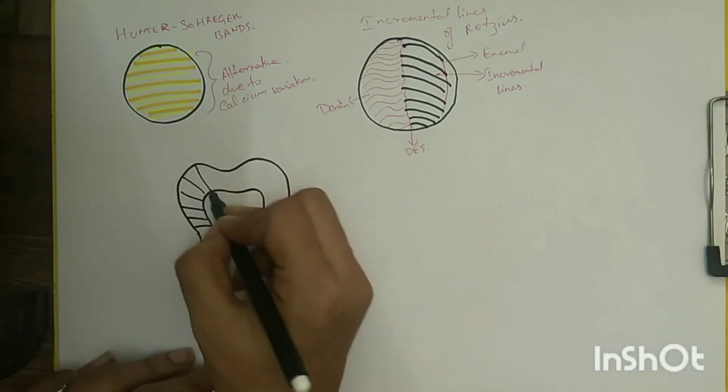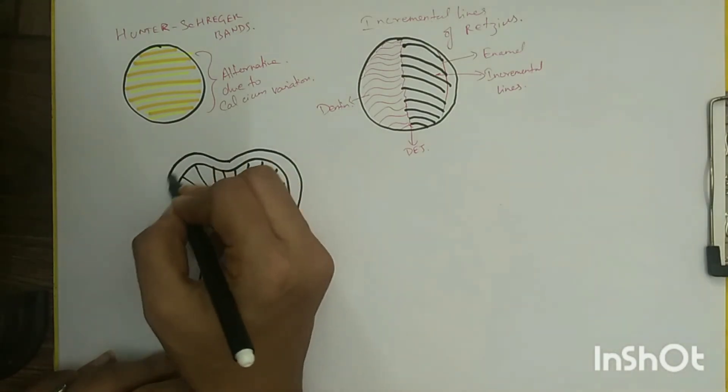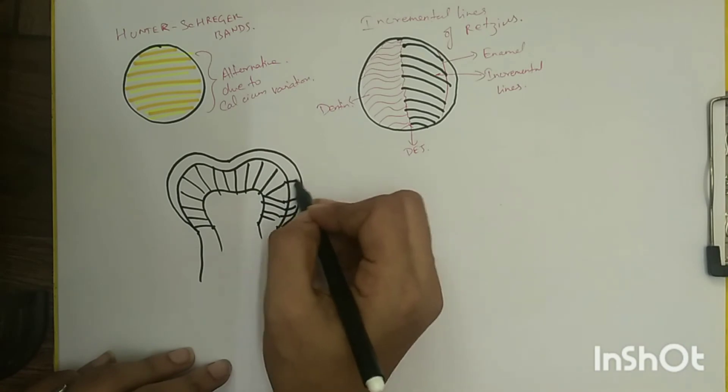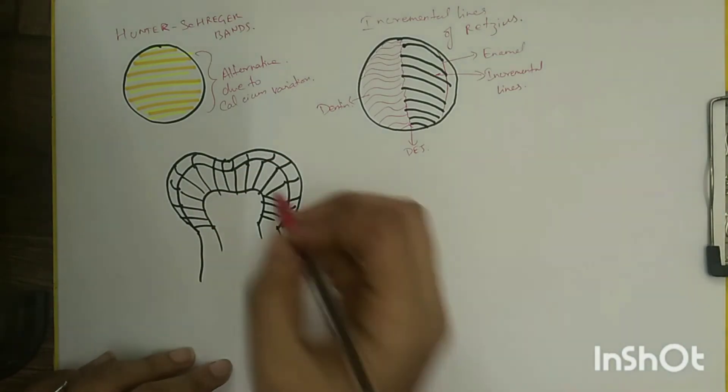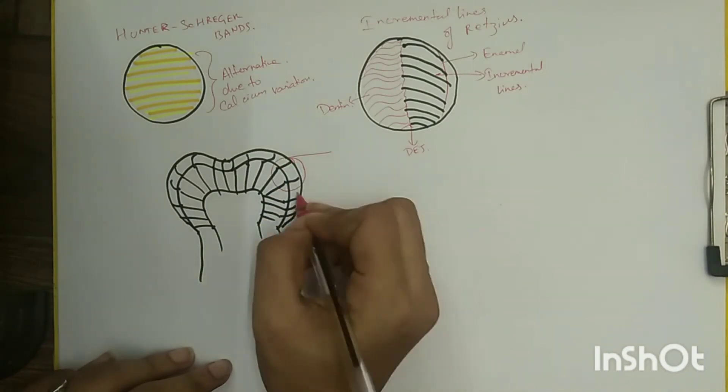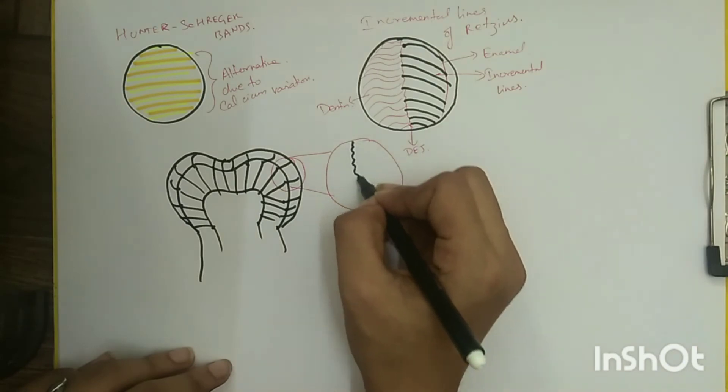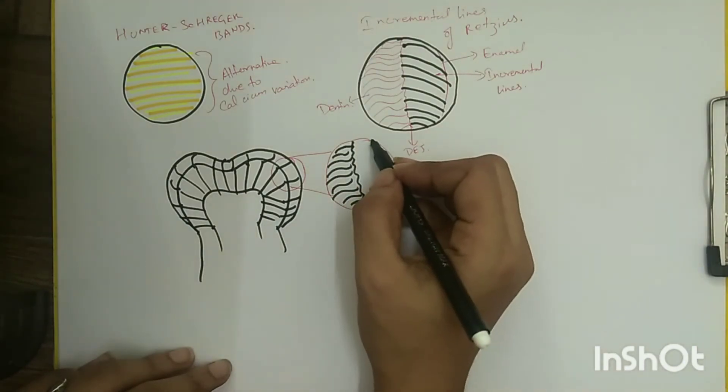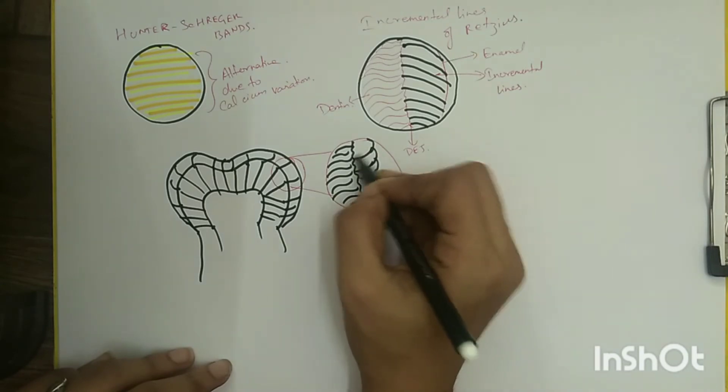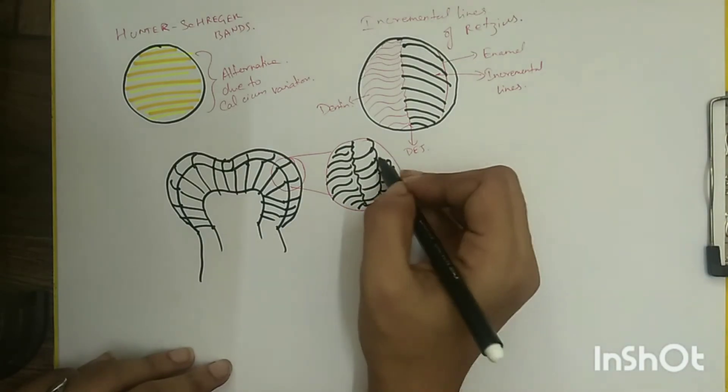Perikymata are transverse wave-like grooves lying parallel to each other and to the cementoenamel junction, running circumferentially across the surface of the crown. These are seen in the region where the incremental lines of Retzius reach the outer surface of the enamel and are thought to be the external manifestation of the lines of Retzius.